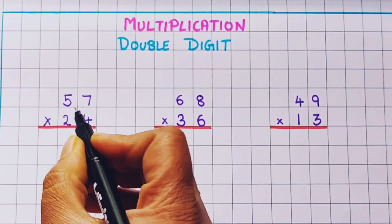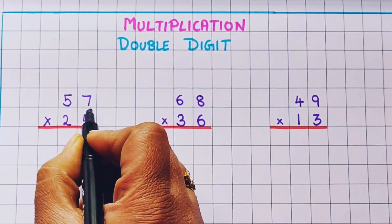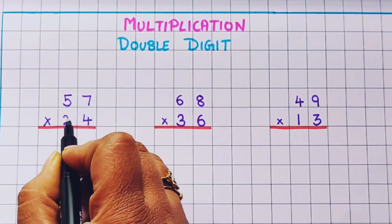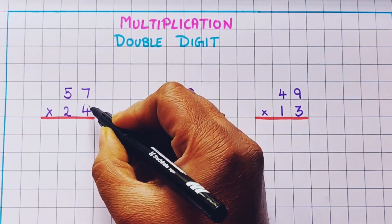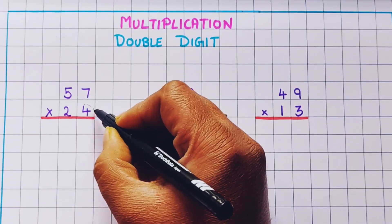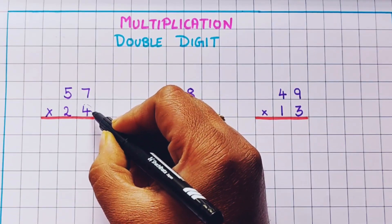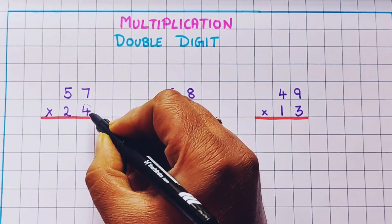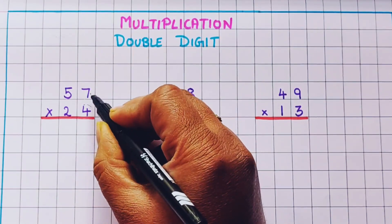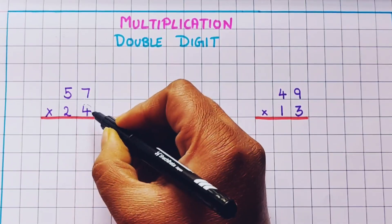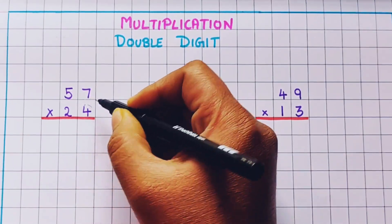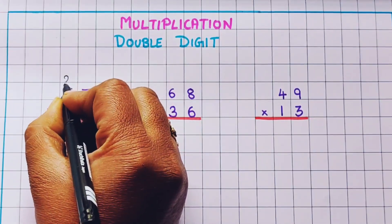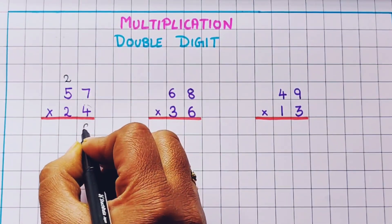Let's begin with the first problem: 57 into 24. First we are going to do the multiplication with the number in the units place, which is 4. So first we multiply 4 into 7, then 4 into 5. 4 sevens are 28, so I'll write 2 and here 8.